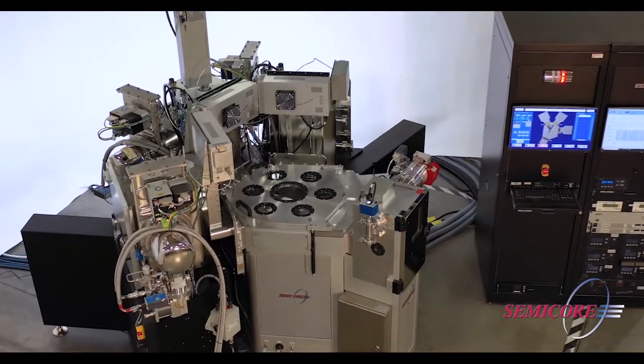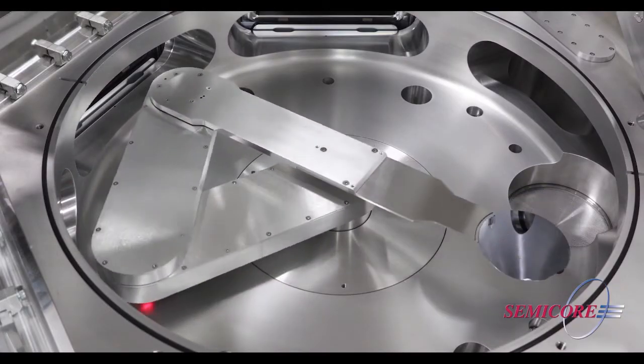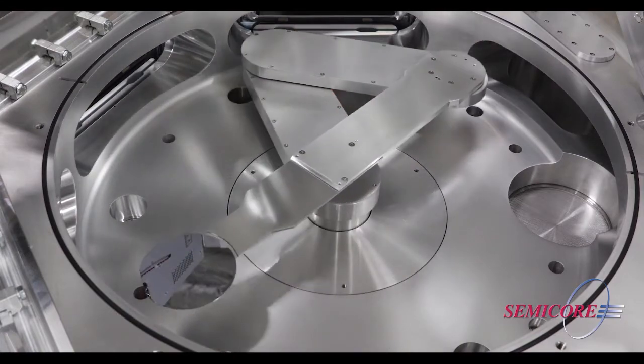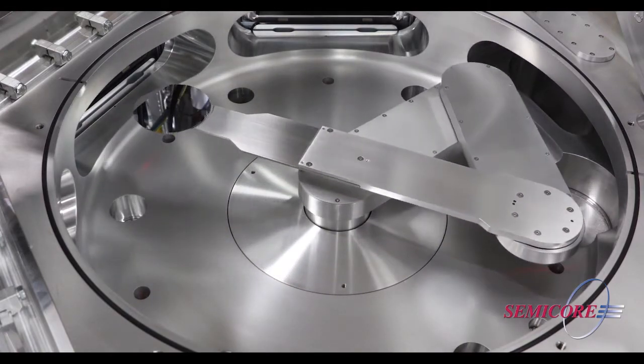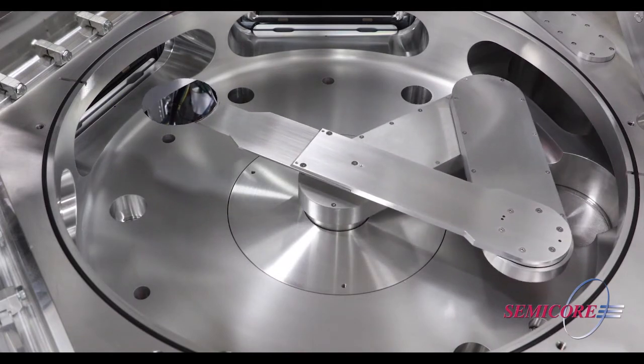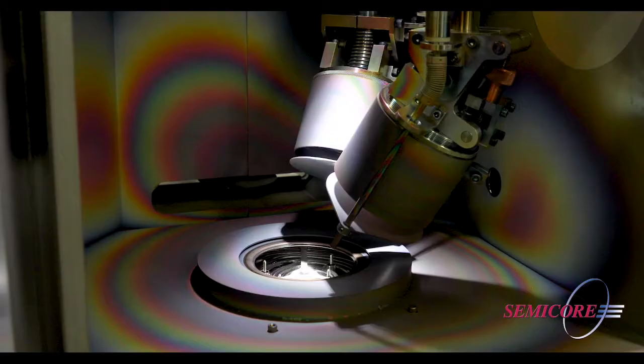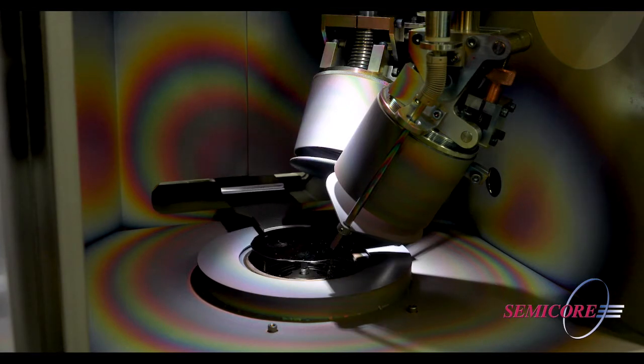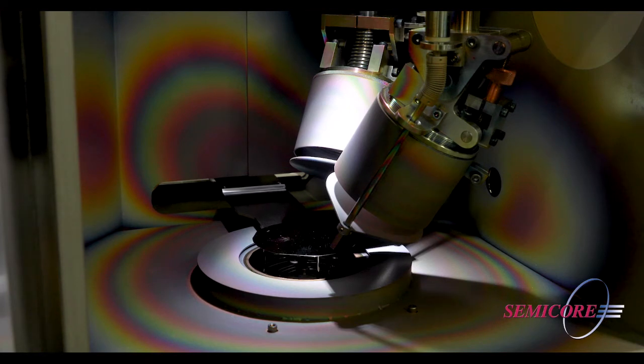Semicore's CAPOCT process modules can be configured to meet a wide range of today's demanding deposition techniques, including RF sputtering, DC or pulse DC sputtering, and high impulse magnetron sputtering. Other process features are available such as RF etch, substrate bias, process heating or cooling, and more.